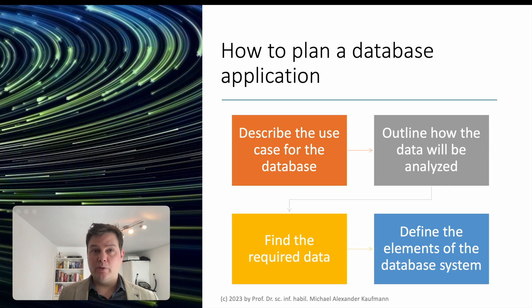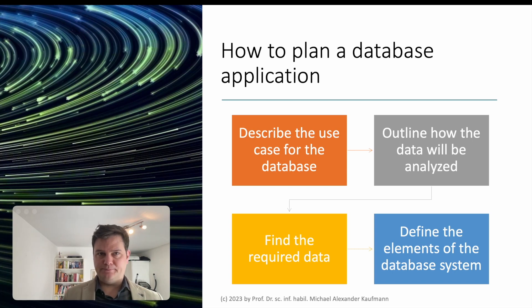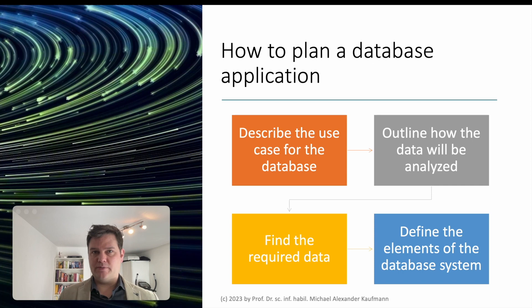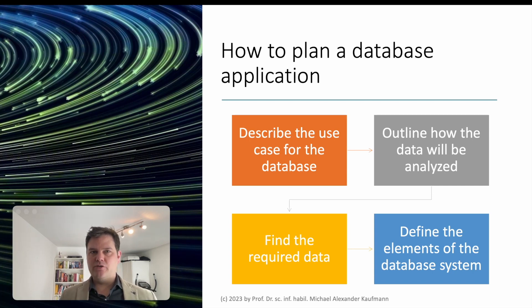In this chapter we will plan this example database for movie recommendations in detail by taking the following steps. First we describe the use case for the database. Then we'll outline how the data will be analyzed. Then we have to find the required data. And finally we define the elements of the database system. A database system is not an end in itself — the database always exists for a purpose. Data becomes valuable when it supports better decisions. A good use case for a database generates actionable knowledge by analyzing data.